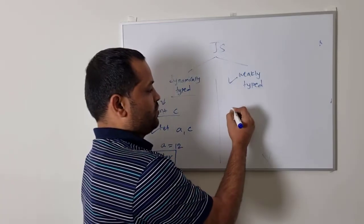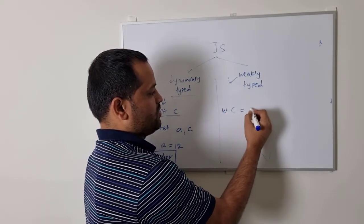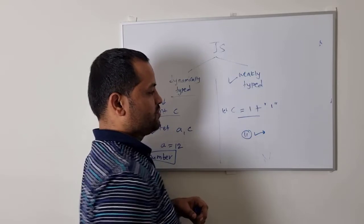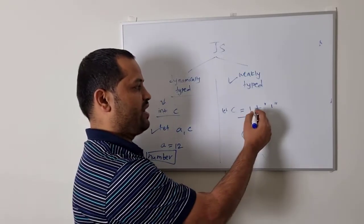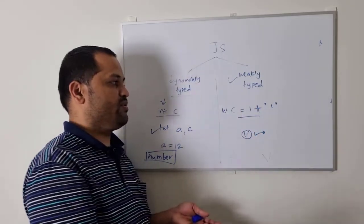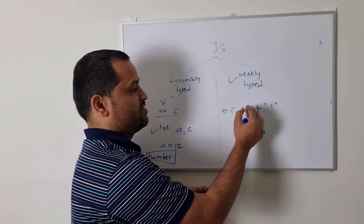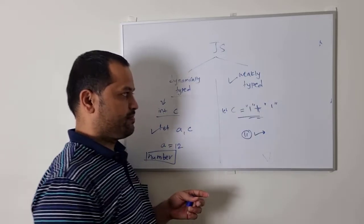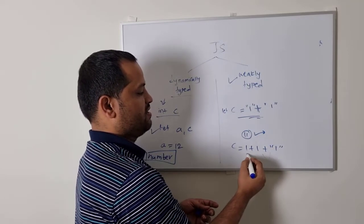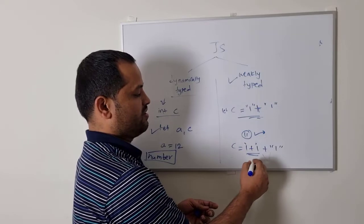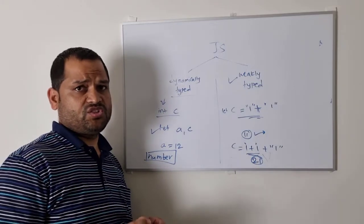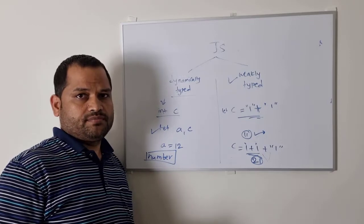We can do in JavaScript something like `let C = 1 + "1"` and the answer will be `"11"`. At runtime it will decide that we are trying to add the number `1` and the string `"1"`, so it converts the number into a string and concatenates them. But if you do `C = 1 + 1 + "1"`, since the first two operands are numbers, it will sum them first, and then that result is concatenated with the string — so the output will be `"21"`. These quirky behaviors are there in JavaScript, and that's why it is called a weakly typed language.